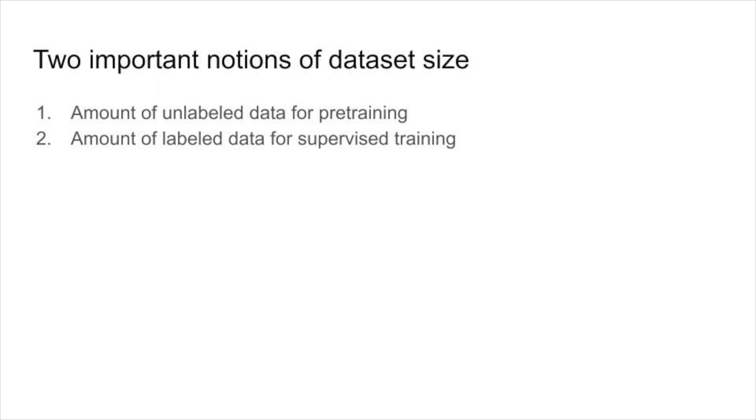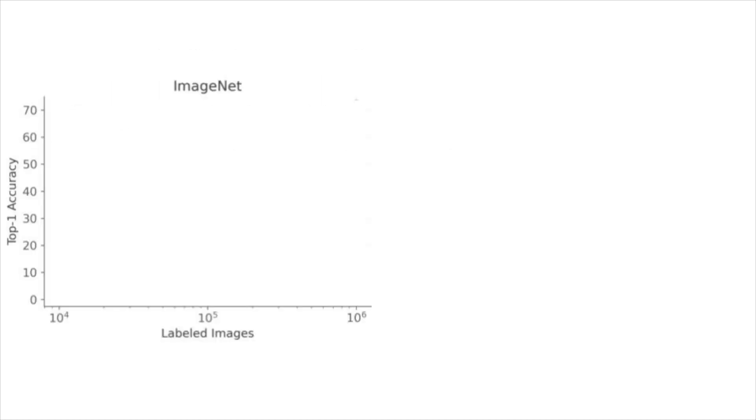Labels are expensive, so we'd like to use as few as possible. Let's take a look at some ImageNet performance numbers. On the x-axis, we have the amount of labeled data used for training a linear classifier.